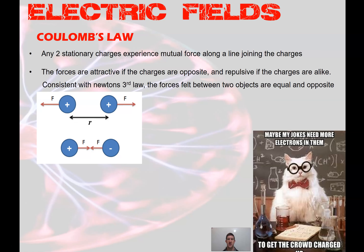The charge on a proton is positive and equal in magnitude to the charge of the electron. On the formula sheet you'll be given the electron charge but not the proton charge. So in a question asking you to calculate something involving a proton, the charge is exactly the same as the electron, just in the opposite direction. Now onto Coulomb's law: any two stationary charges experience a mutual force along the line joining the charges.